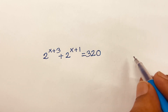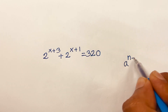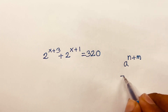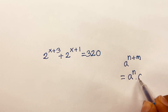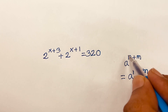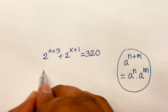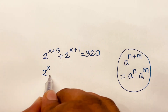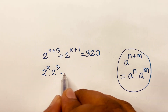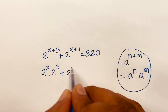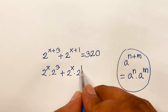We know the exponential rule: a to the power n plus m is equal to a to the power n times a to the power m. According to this rule, we can write 2 to the power x times 2 to the power 3, plus 2 to the power x times 2 to the power 1.